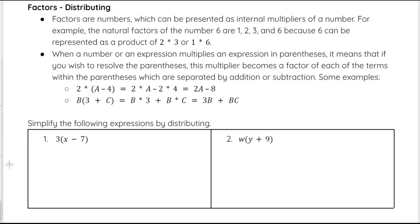It's also good to know how distribution works, and specifically factors and how those work together. Factors are numbers which can be presented as internal multipliers of a number. For example, the number 6 — I can list the whole number factors of 6 by thinking of what two whole numbers multiply together to give 6. So 1 times 6 gives us 6, meaning 1 and 6 are both factors of 6.